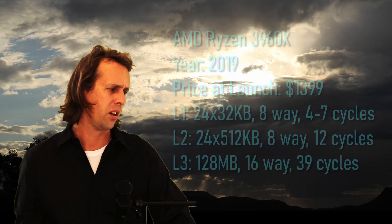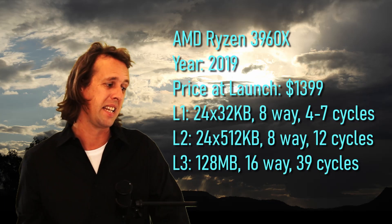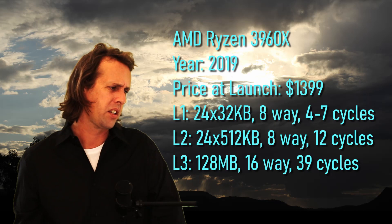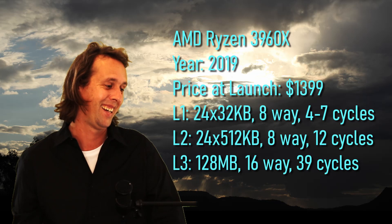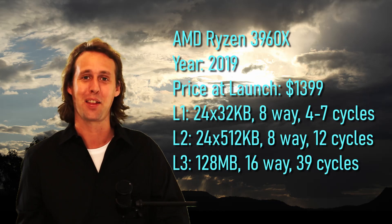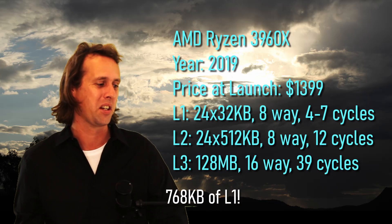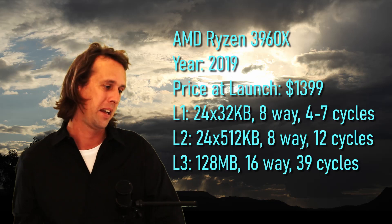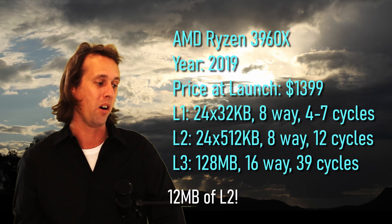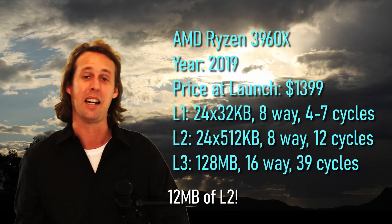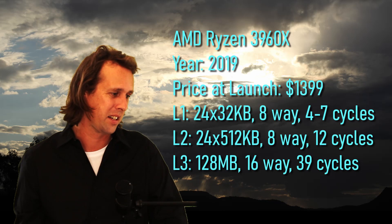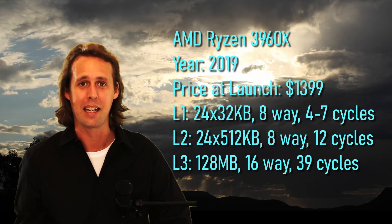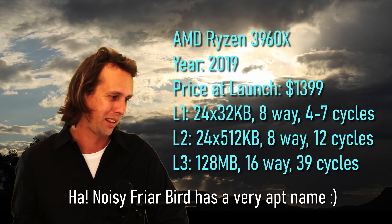Also in 2019 we got a new Threadripper: the Ryzen Threadripper 3960X, which has 24 cores — an absolute and utter monster. Each core has a 32-kilobyte L1, 8-way set associative, and 4 to 7 cycles. It's got 24 by 512-kilobyte, 8-way set associative, 12-cycle L2 caches. And then the L3 size is just off the charts — 128 megabytes.